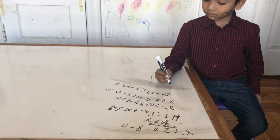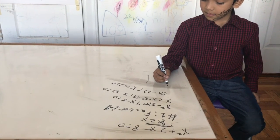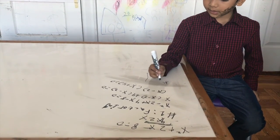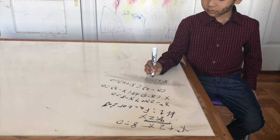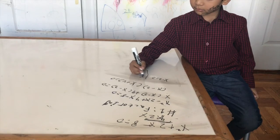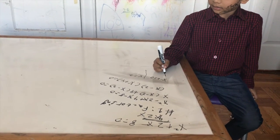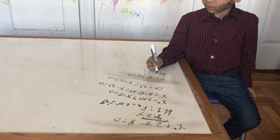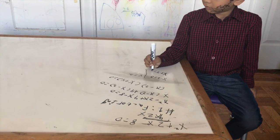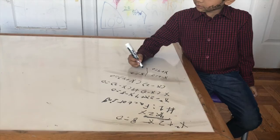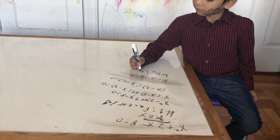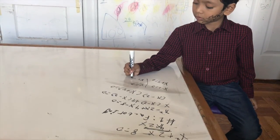So X minus 2 equals zero, which gives X equals 2. And X plus 4 equals zero, so X equals negative 4.